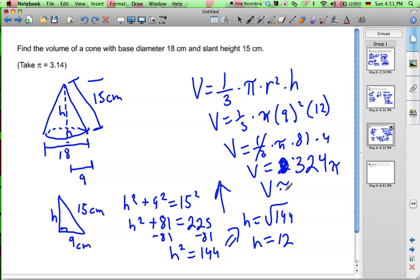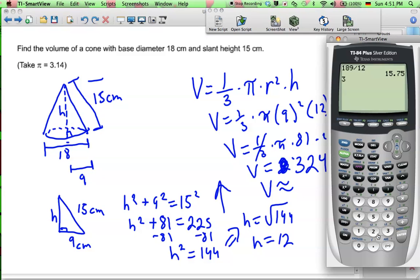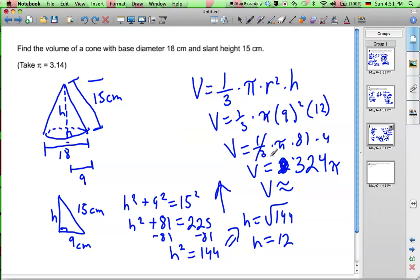And if we approximate that with our calculator, we get 324 times pi. That equals about 1017.9. So we get 1017.9 cubic centimeters. So just over a liter. And that's our final answer.